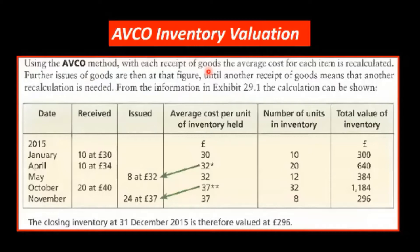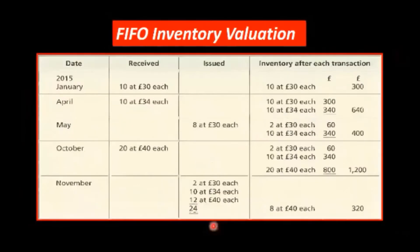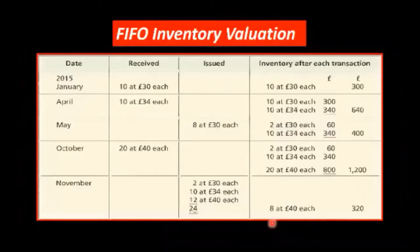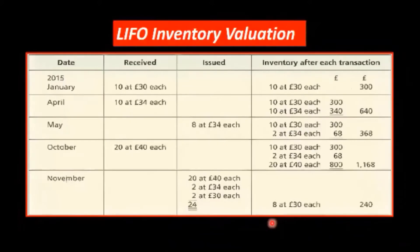Why would it change? Because you are using the formula that we had here: total cost of items divided by the number of items. Any time you buy items, your total cost will increase, and also the number of items in stock will increase. So your average cost will change. It would change only when you buy goods.